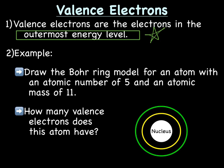I want to do a quick example here. Let's draw a Bohr ring model for an atom with an atomic number of 5 and an atomic mass of 11. If the atomic number is 5, that means we have 5 protons, because remember that the protons are the same as the atomic number. We have 5 electrons because the number of electrons need to equal the number of protons. Let's finish this.